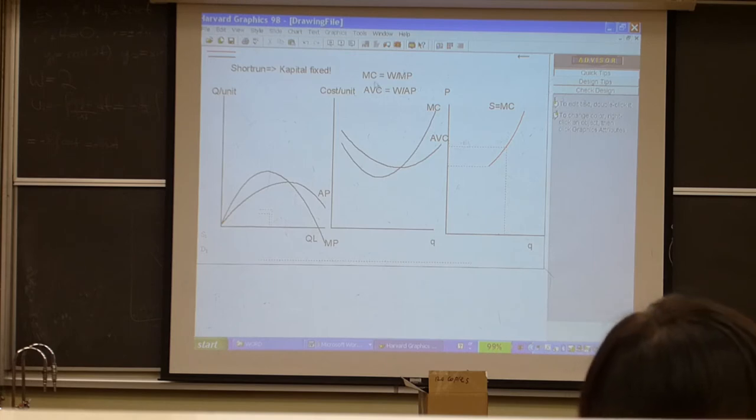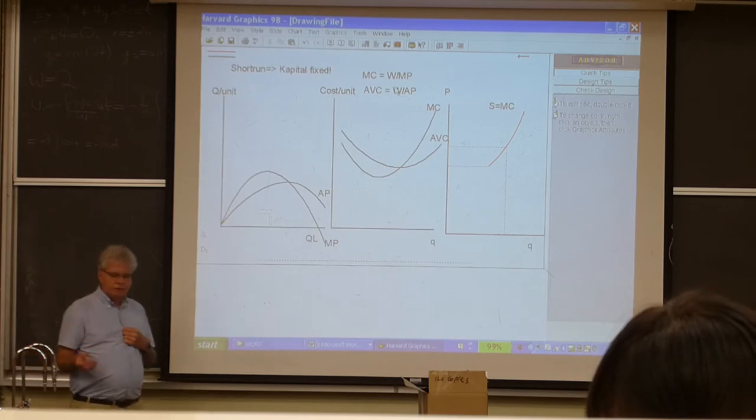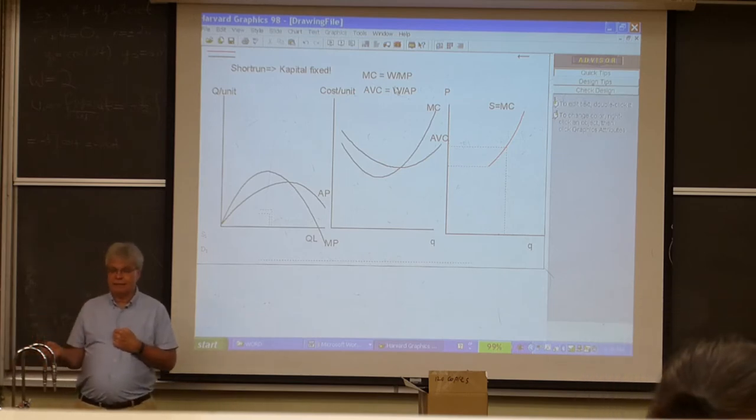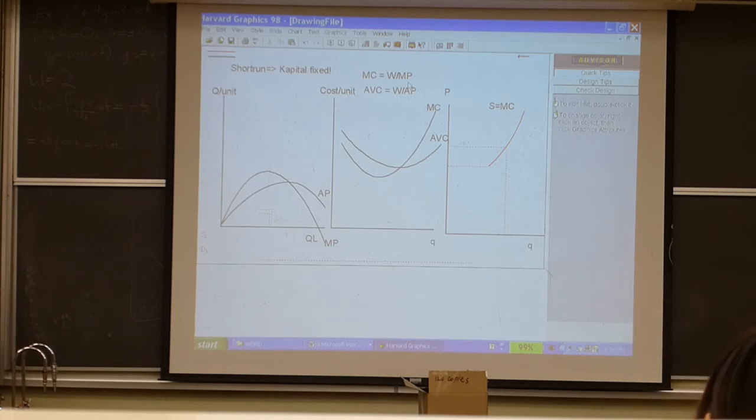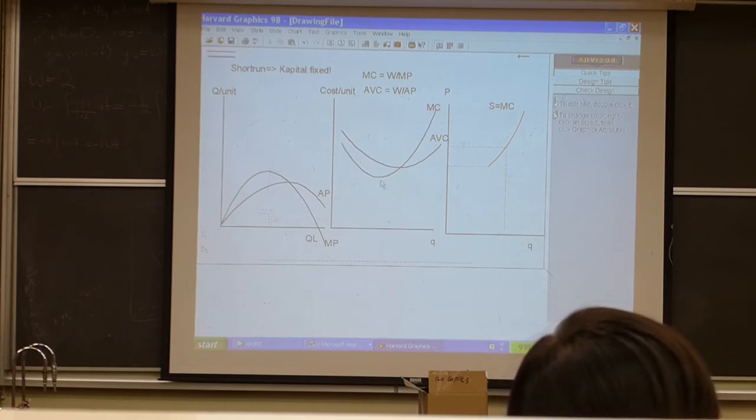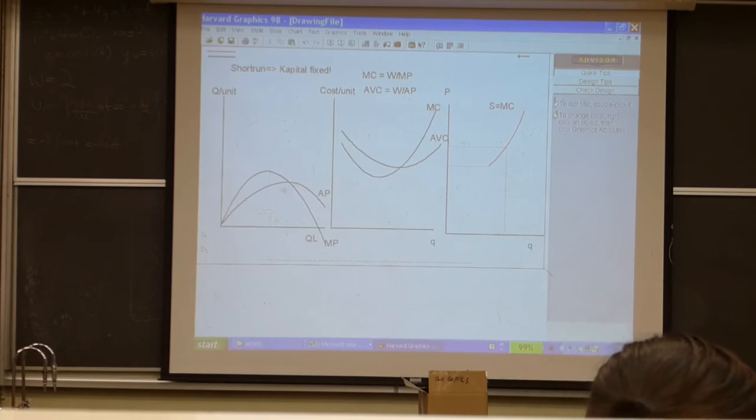Marginal product defines marginal cost. Marginal cost is the cost of additional output by changing variable units. For simplicity, we said the cost of variable units is W. So marginal cost is W divided by MP. If marginal product goes up, given that W is fixed, marginal cost goes down. If marginal product goes down, marginal cost goes up. So marginal cost falls when marginal product rises, is at a minimum when marginal product is at a maximum, and rises when marginal product falls.